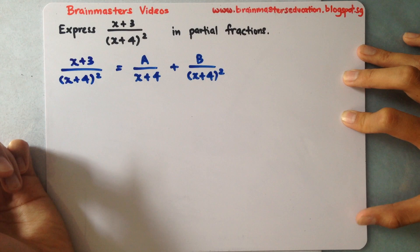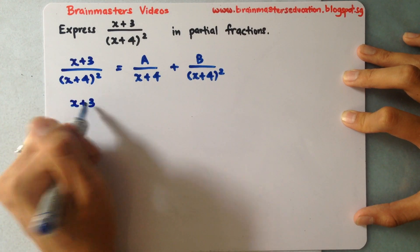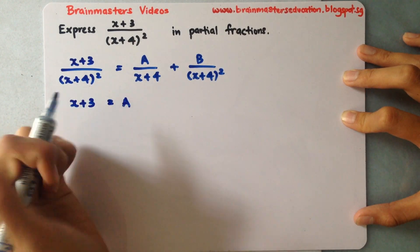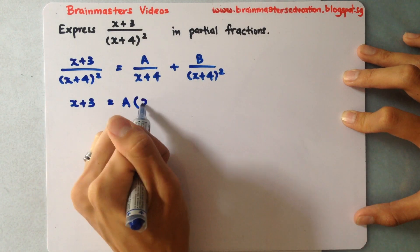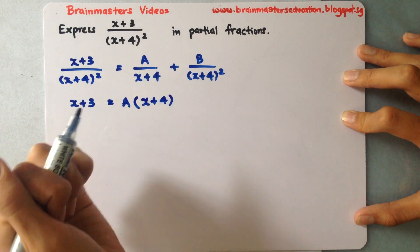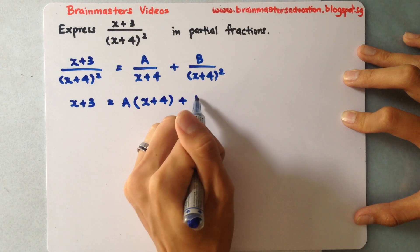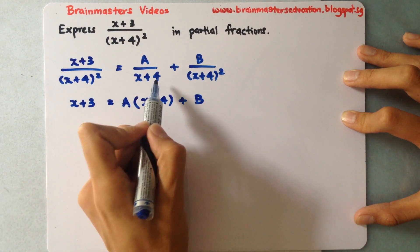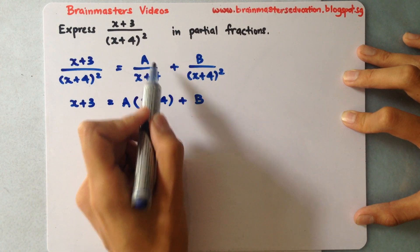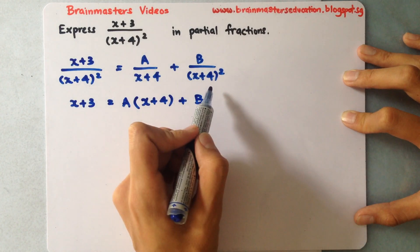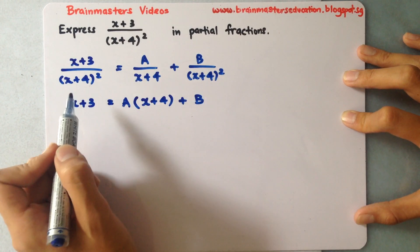Now same thing, I'll take the numerator which I have, my (x+3), equals to A multiplied by (x+4) plus B. This one multiplies (x+4) multiplies (x+4) in order to achieve the same denominator for all three fractions.